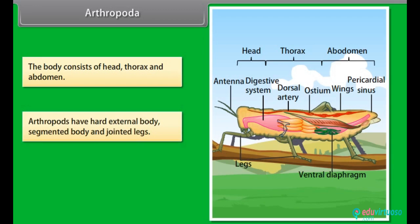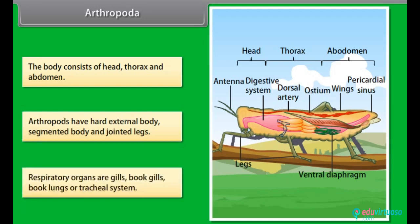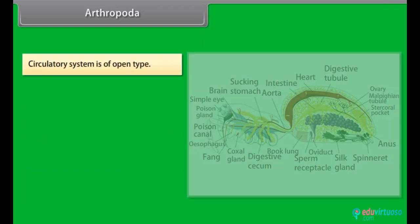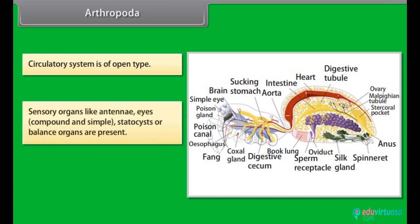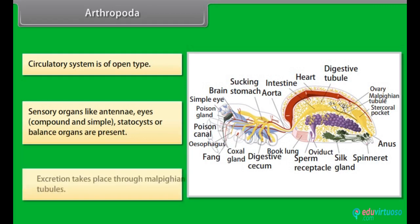Arthropods have a hard exoskeleton, segmented body and jointed legs. Respiratory organs are gills, book gills, book lungs or tracheal system. Circulatory system is of open type. Sensory organs like antennae, eyes (compound and simple) and statocysts or balance organs are present. Excretion takes place through Malpighian tubules.